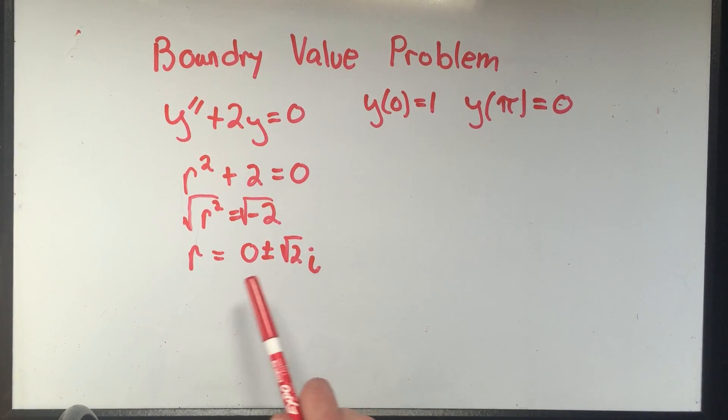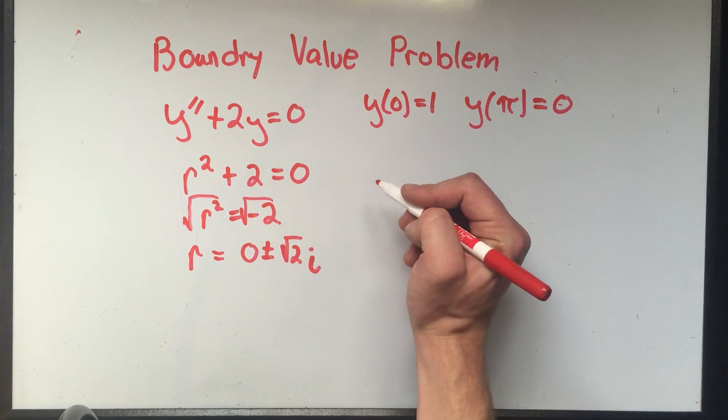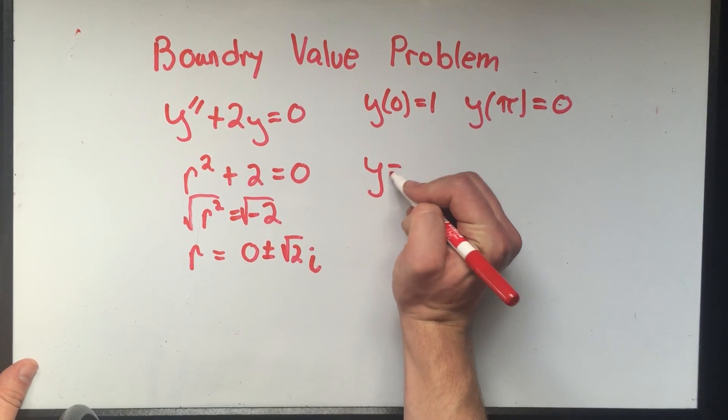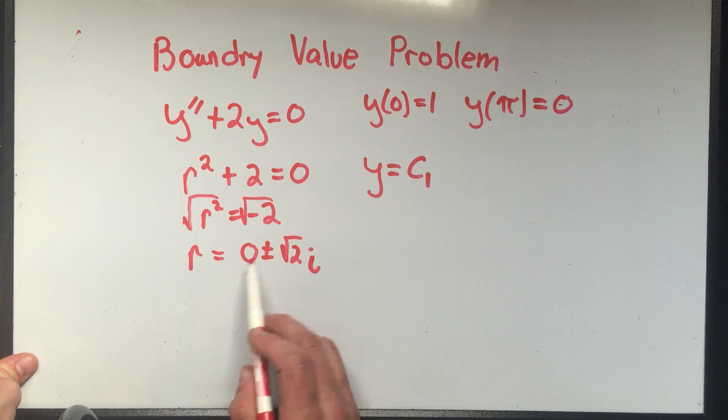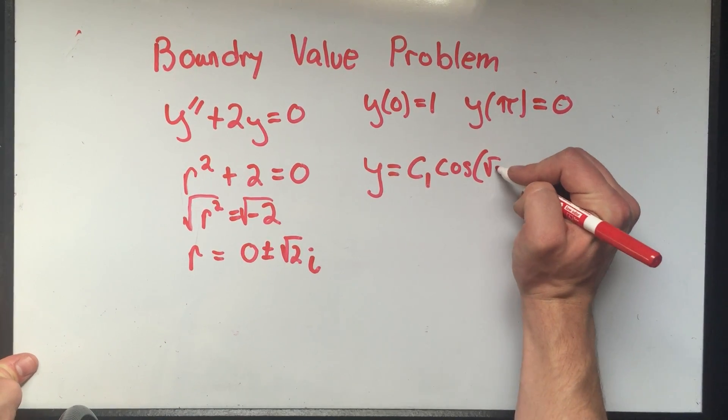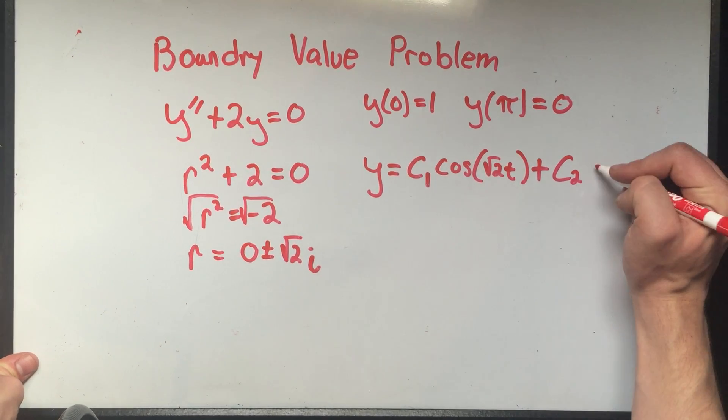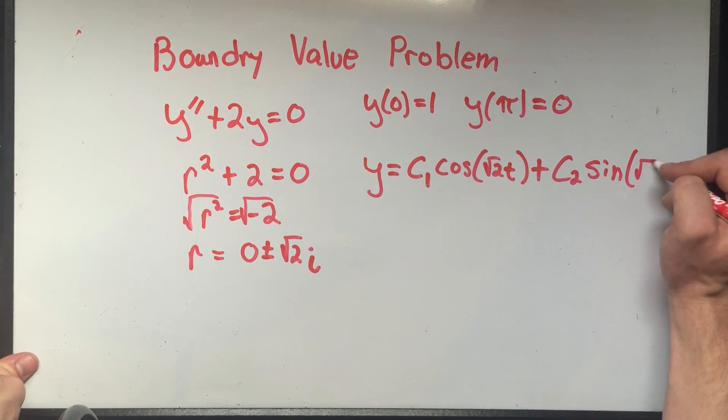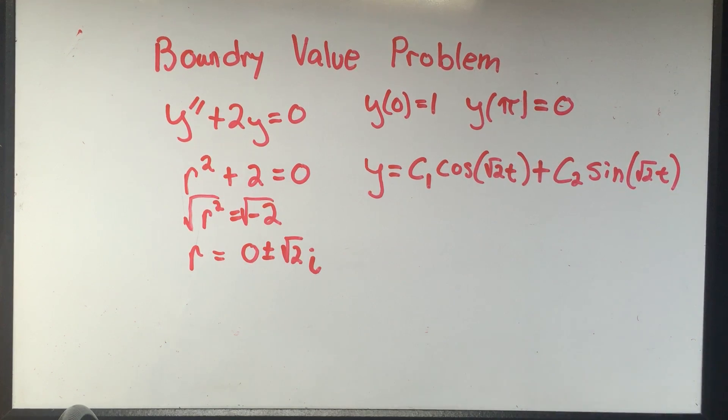If you remember, when we get imaginary roots of the characteristic equation, I've got to do the sine and cosine thing, right? So our general solution would be c1 cosine of square root of two t plus c2 sine square root of two t. If you've learned everything you need to learn about second-order differential equations, this comes as no surprise to you. And this is all just very similar, very straightforward.